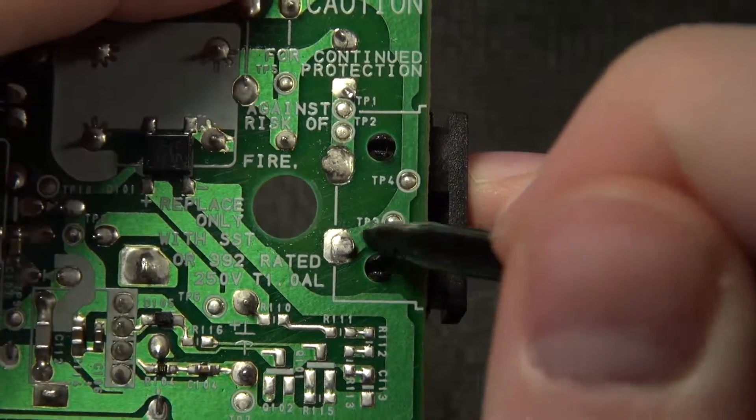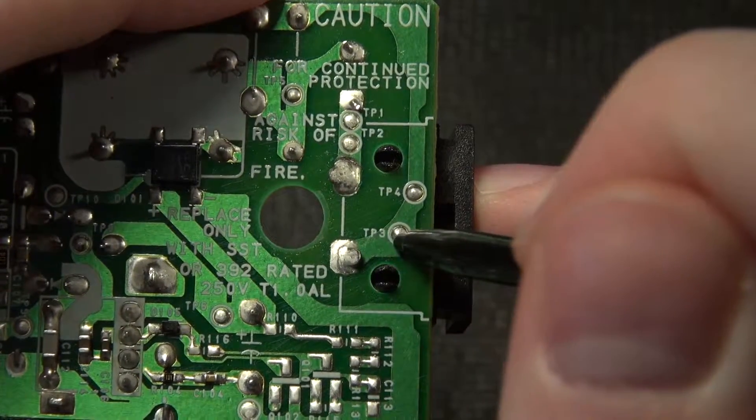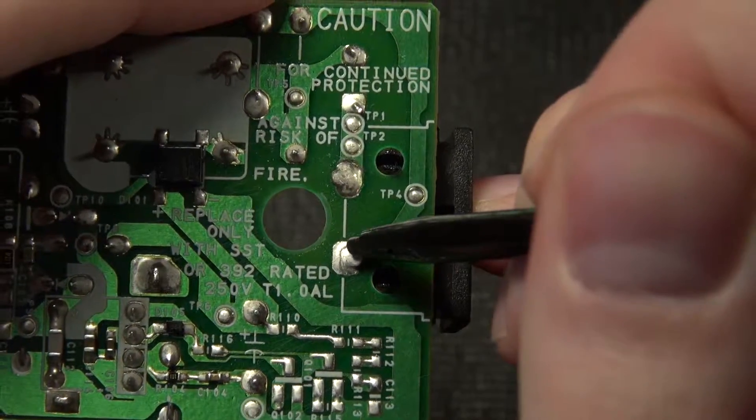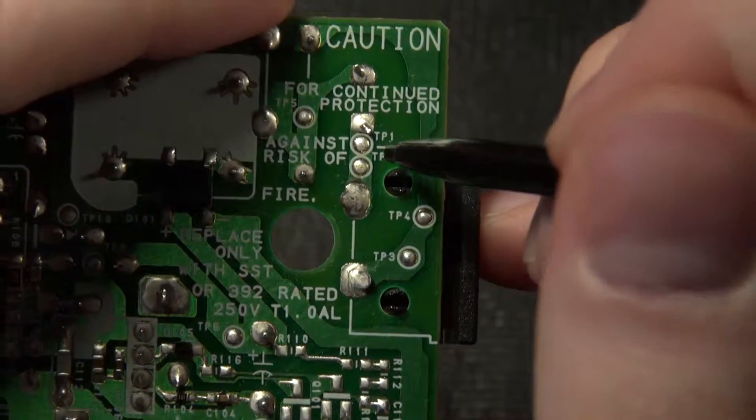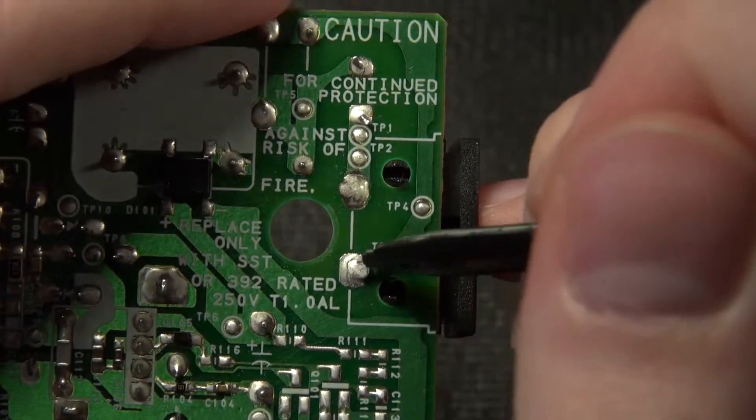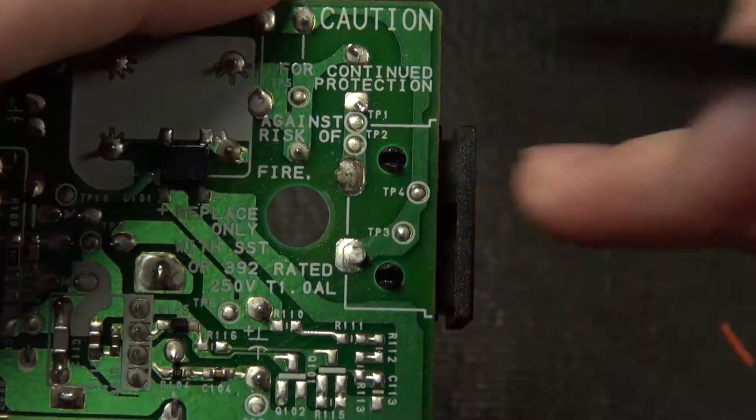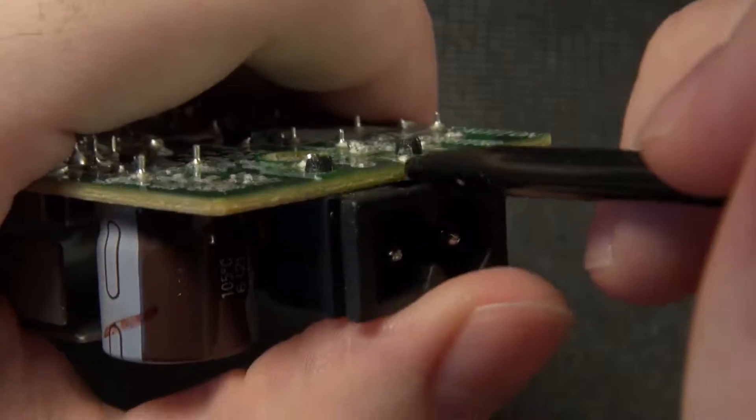You can either scrape away the trace and bring the solder out, or if you have options you can actually just jump this over to another point like these test points here. We can just solder wire and jumper over, or we can do a combination. The best option would be to replace this connector with one that has tabs.